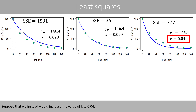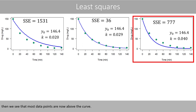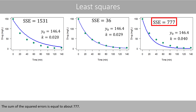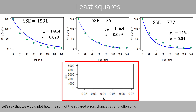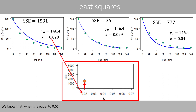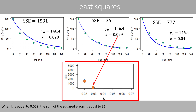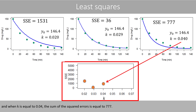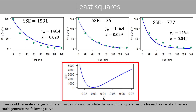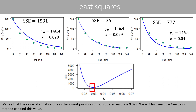Suppose that we instead increase the value of k to 0.04. Then most data points are now above the curve, and the sum of the squared errors is equal to about 777. If we plot how the SSE changes as a function of k, we can see that when k equals 0.02 the SSE is 1531, when k equals 0.029 the SSE is 36, and when k equals 0.04 the SSE is 777. Generating a range of k values produces a curve showing that k = 0.029 results in the lowest possible sum of squared errors.